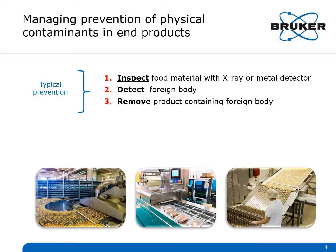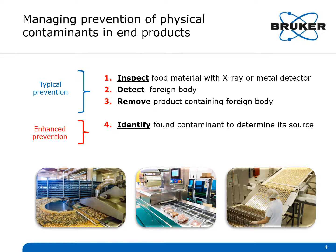Typical management procedures to prevent physical contaminants from ending up in finished products incorporate the inspection of food material during production. This is usually achieved with an X-ray or metal detector. When a foreign body is detected, the product containing it is removed. Enhanced prevention procedures include identifying the found contaminant to determine its source, which enables correction of any equipment problems in a more timely manner.